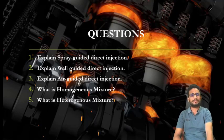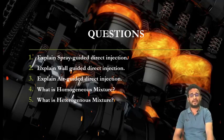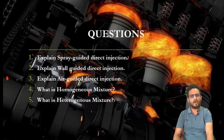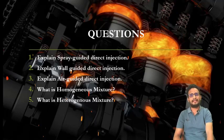The remaining questions for your assignments are: explain the spray guided direct injection system, explain the wall guided direct injection system, explain the air guided direct injection system, and define homogeneous and heterogeneous mixtures. In upcoming lectures we will discuss after-treatment devices, lean NOx trap systems, and how to reduce emissions from GDI systems, including which catalytic converters are used. Till then, stay home and thank you.